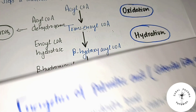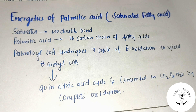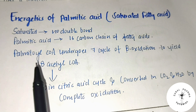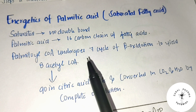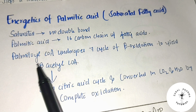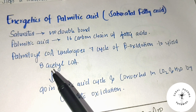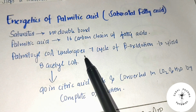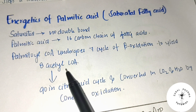Now let's talk about the energetics of palmitic acid. Palmitic acid is a saturated fatty acid — saturated means no double bond. It is a 16-carbon chain. Palmitoyl CoA undergoes 7 cycles of beta-oxidation to yield 8 acetyl CoA molecules.